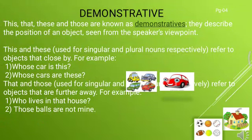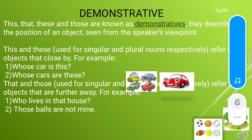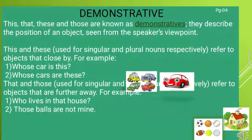Demonstrative: This, that, these, and those are known as demonstratives. They describe the position of an object seen from the speaker's viewpoint. 'This' and 'these' are used for singular and plural nouns that refer to objects that are close by. For example, whose car is this? Whose cars are these? 'This' is used for singular and 'these' is used for plural.